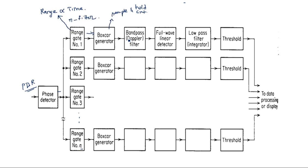The output of the boxcar generator is given to a band pass filter, which is the Doppler filter. Different Doppler filters with different frequencies are used for each channel, and each band pass filter selects a particular Doppler frequency component from the received signal. This is where stationary and moving targets are separated — only moving targets, identified by their Doppler frequency component, pass through this band pass filter, and all other signals are eliminated at this stage.